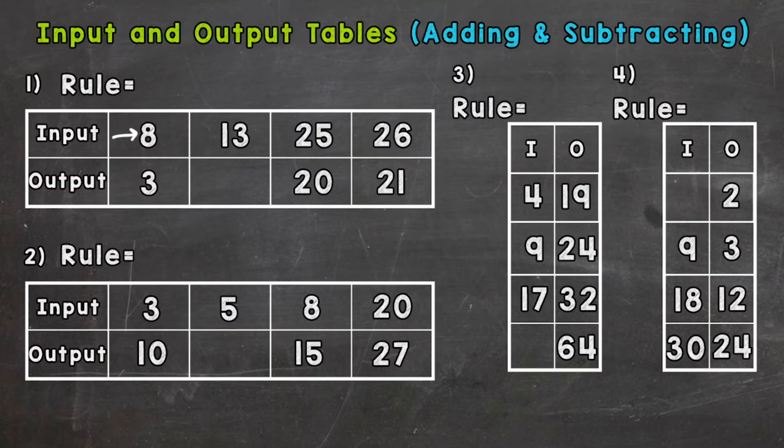So this is going to be subtraction. What is being subtracted from each number, each input? And the answer is 5. 8 minus 5 is 3, 25 minus 5 is 20, 26 minus 5 is 21. So our blank, 13 minus 5, is 8. And our rule then is we are taking our inputs, subtracting 5, and that will equal our output.